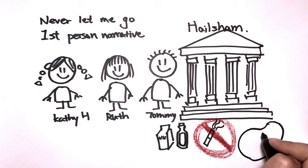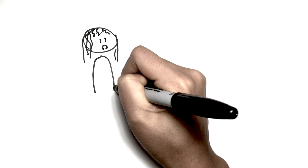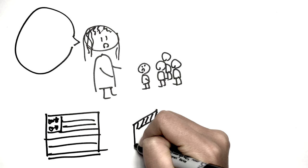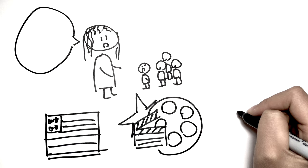One of the guardians, Ms. Lucy, told the students that their future will already be settled for them. She told the students that their only purpose of life is to donate their vital organs, and that is the only point of their lives. Quote: None of you will go to America, none of you will be film stars, and none of you will be working in supermarkets as I heard some of you planning the other day. Your lives are set out for you.